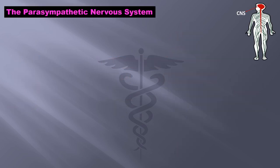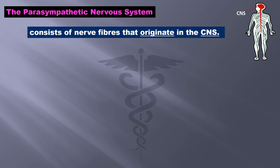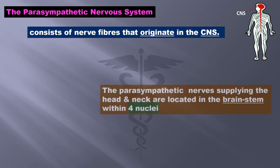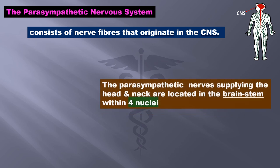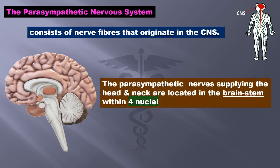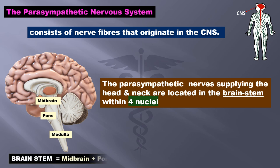The parasympathetic nervous system consists of fibers that originate in the central nervous system. Those supplying the head and neck are located in the brain stem within four nuclei. The brain stem is equal to midbrain plus pons plus medulla.